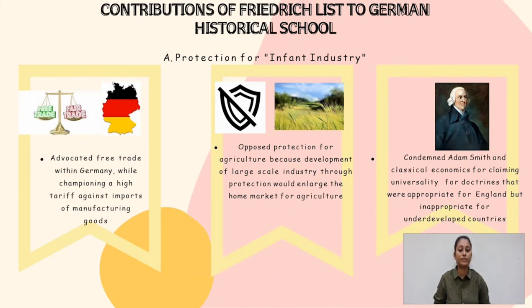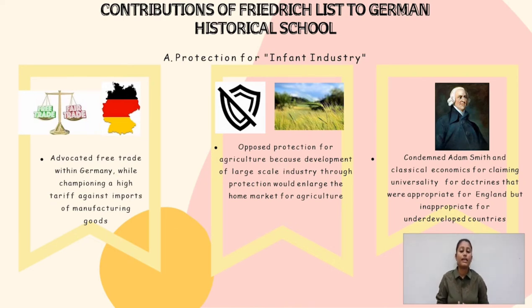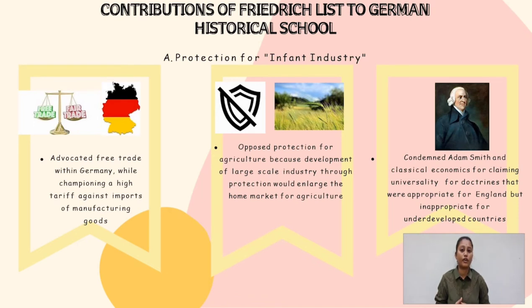The first contribution of Friedrich List to the German Historical School is protection for infant industry. List advocated free trade within Germany while championing high tariffs against imports of manufacturing goods to protect newly emerging domestic industries. He opposed protection for agriculture because, he said, agriculture is an old and mature industry while manufacturing requires cheap food and raw materials. He stressed that the development of large-scale industries through protection would enlarge the home market for agriculture. List also condemned Adam Smith and classical economics for claiming universality for doctrine appropriate for England but not for underdeveloped countries. He popularized the idea of stages of economic growth and urged that governments actively assist nations passing from a lower to a higher stage; only after a country reached industrial maturity could it revert to free trade.